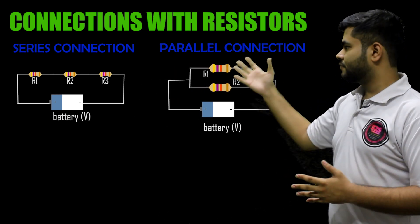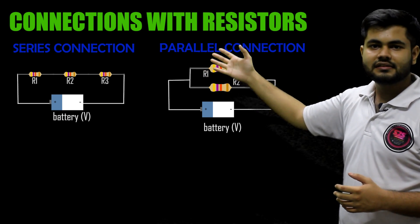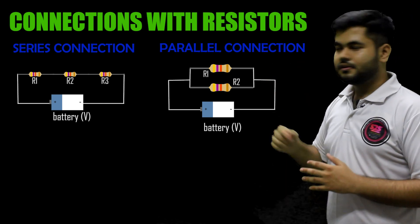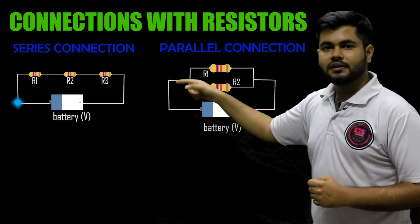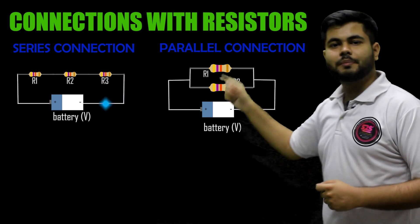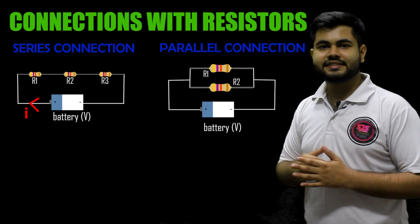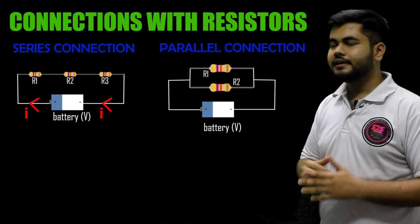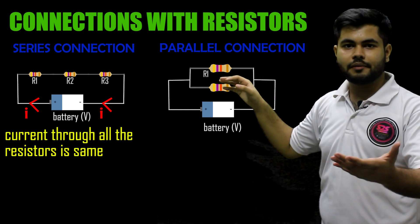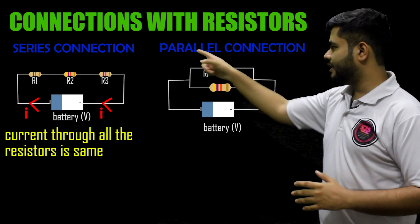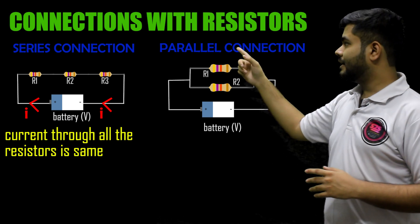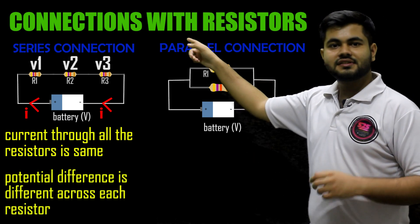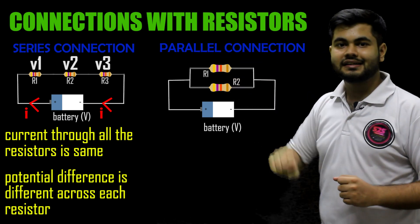Doing a comparative study — in series connection, the resistors are connected one after another. The current comes out of the cell, passes through the resistors, and comes back into the cell. Since there are no other branches, the current through both resistors is the same. However, the potential difference is different across these resistors. So in series connection: current is the same, potential difference is different.